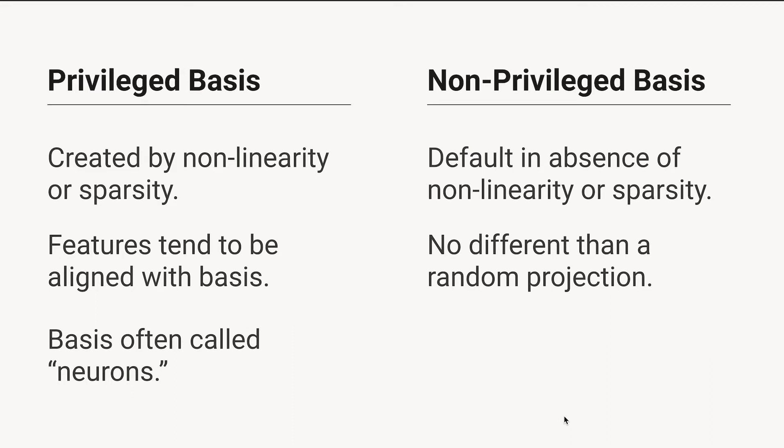So you could have a linear transformation, but if you were regularizing the output, you might have a privileged basis. Or if your weights had some kind of L1 sparsity on them, that might create it. There are other ways to get a privileged basis, but the most common reason would be that you have a non-linearity, and especially a strong non-linear function.